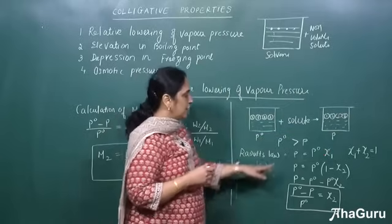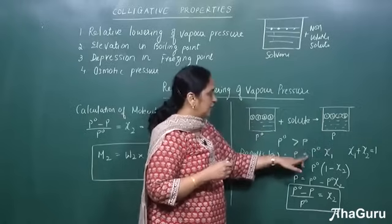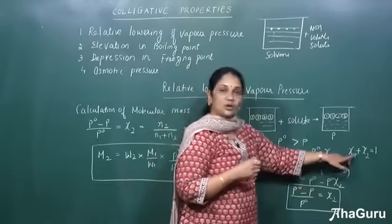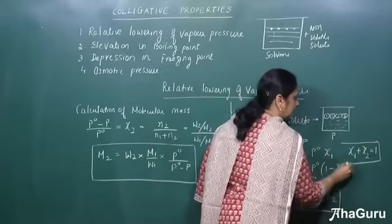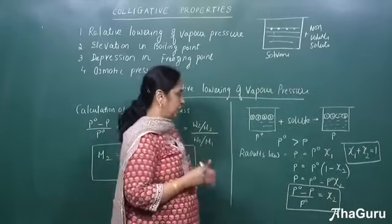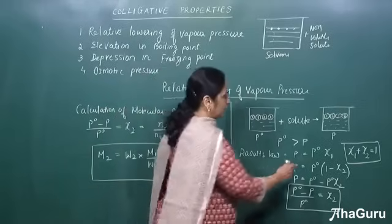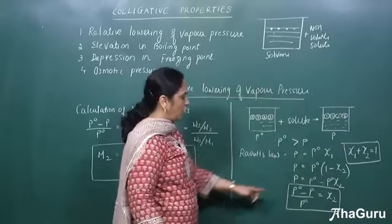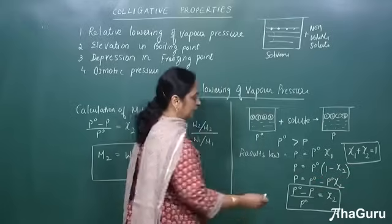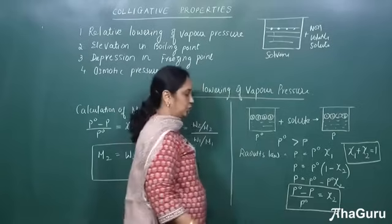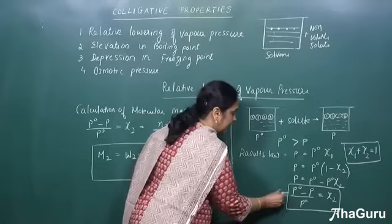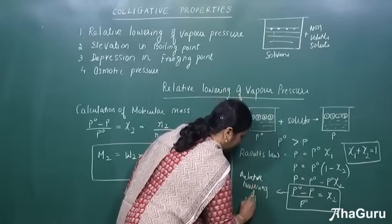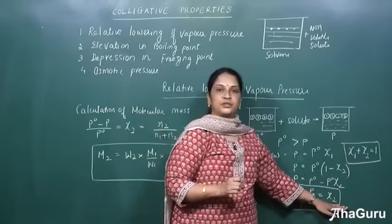According to Raoult's law, the pressure after adding the solute equals P0 — the vapor pressure of the pure solvent — multiplied by x1, the mole fraction of the solvent. We know the total mole fraction always equals 1, that is x1 + x2. Substituting, x1 becomes 1 − x2, so P = P0 − P0·x2, which gives us P0 − P / P0 = x2. This quantity, (P0 − P) / P0, is the relative lowering of vapor pressure, and it equals the mole fraction of the solute, x2.